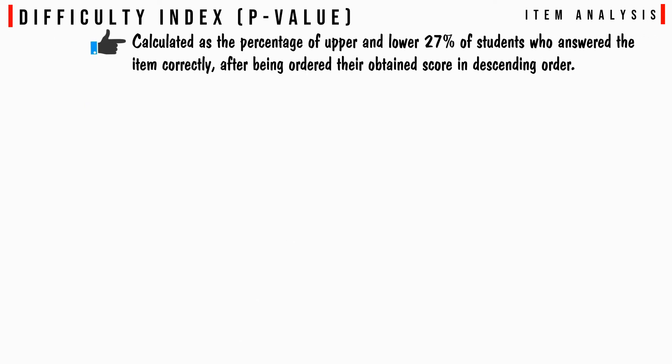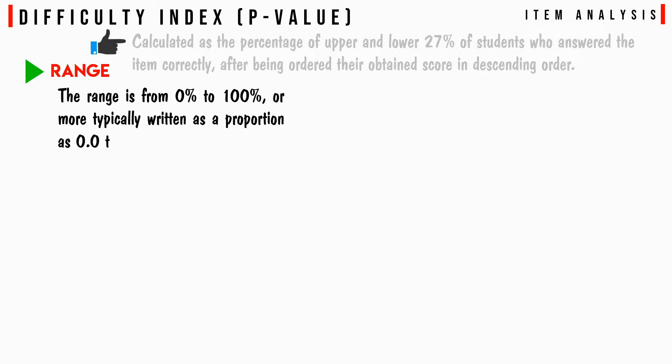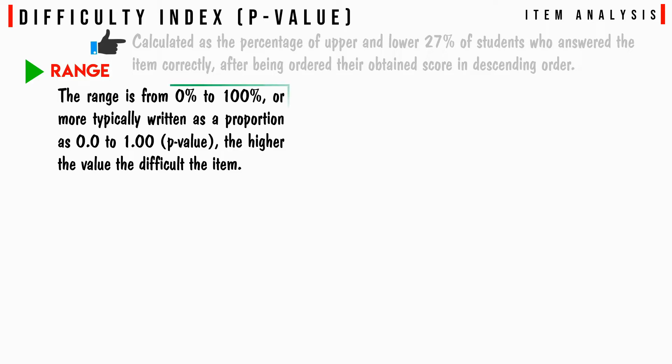Difficulty value is calculated as the percentage of upper and lower 27% of students who answered the item correctly, after ordering their obtained scores in descending order. The range is from 0% to 100%, or more typically written as a proportion from 0.0 to 1.00, that is the p-value. The higher the value, the easier the item.